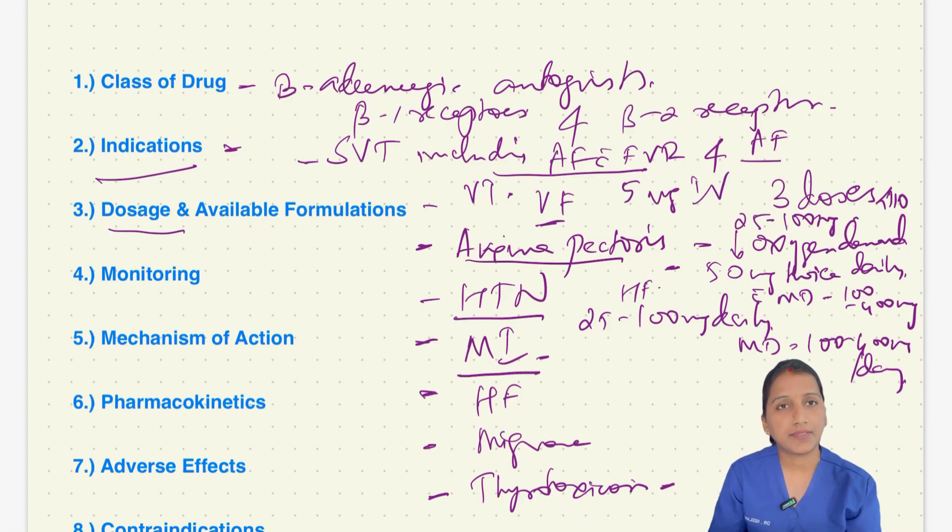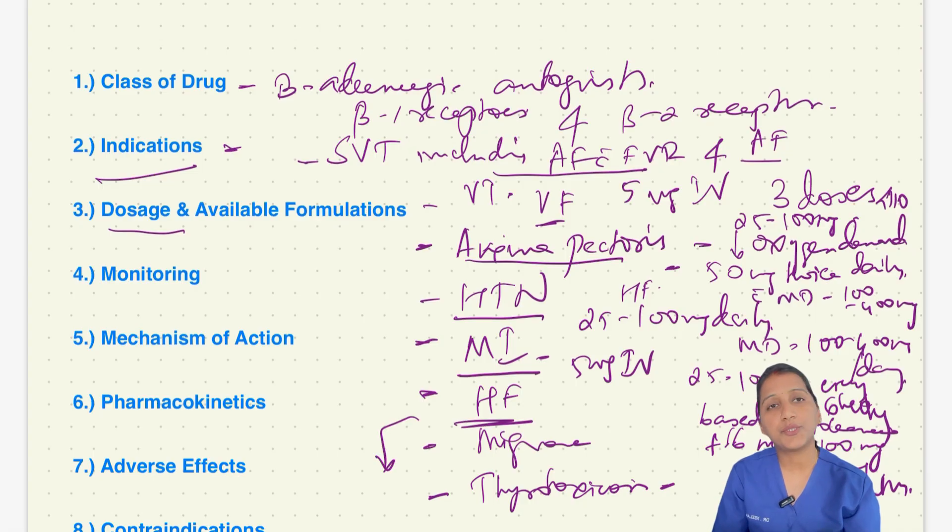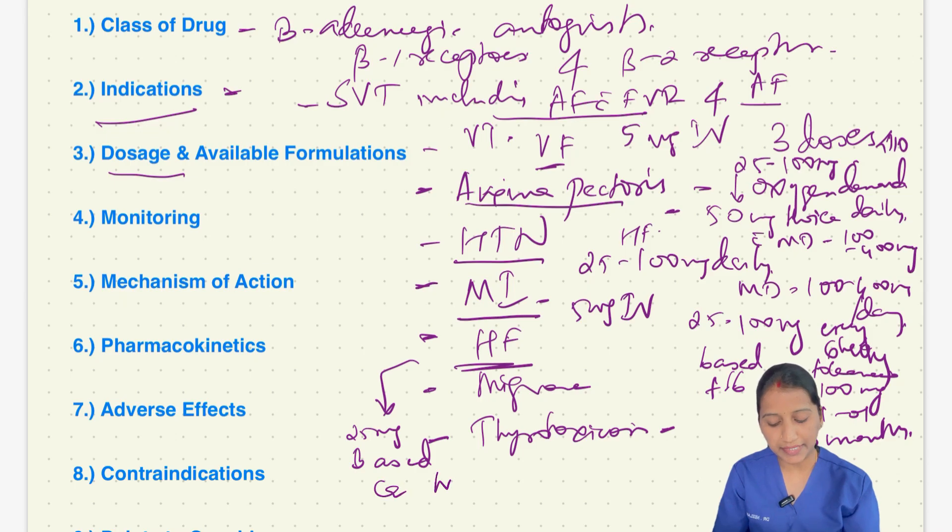In case of MI, the dose is 5 mg IV. Based on the response, patient can be put on oral dose that is 25 to 100 mg every 6th hourly based on tolerance followed by a maintenance dose of 100 mg twice daily for up to 3 months. In case of heart failure, the dose is 25 mg once a day for 2 weeks and based on the tolerance can be adjusted to a maintenance dose of 100 to 200 mg daily.